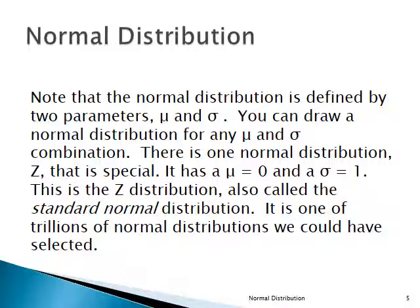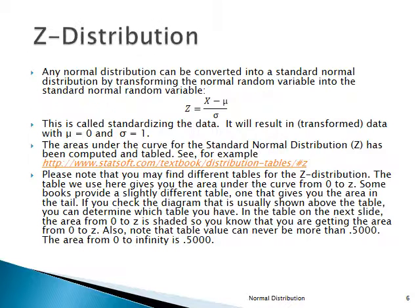We can take any normal distribution and convert it to a standard normal distribution Z — very much like getting Z scores. The way we do that is take X, the value of the normal random variable, minus the mean mu, divided by the population standard deviation sigma. The original distribution X is normally distributed with mean mu and standard deviation sigma. The transformed distribution Z has a mean of zero and a standard deviation of one.